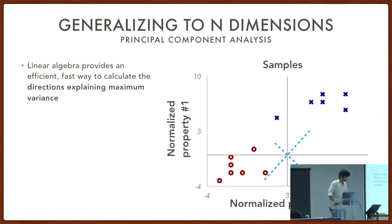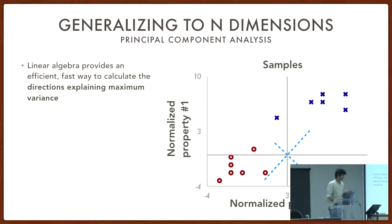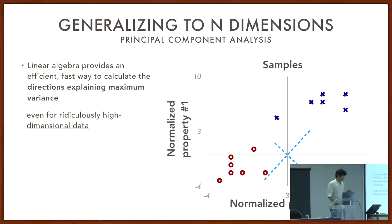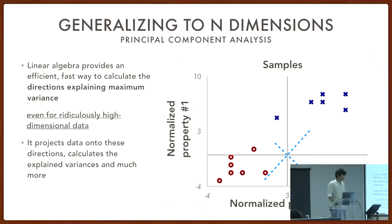Principal component analysis basically uses linear algebra to do all of this for you. All of that 'what if you had an imaginary direction' — it just finds that direction for you. It finds the coordinates of each of your points — each customer, each bird — in that space, and it happens extremely fast.